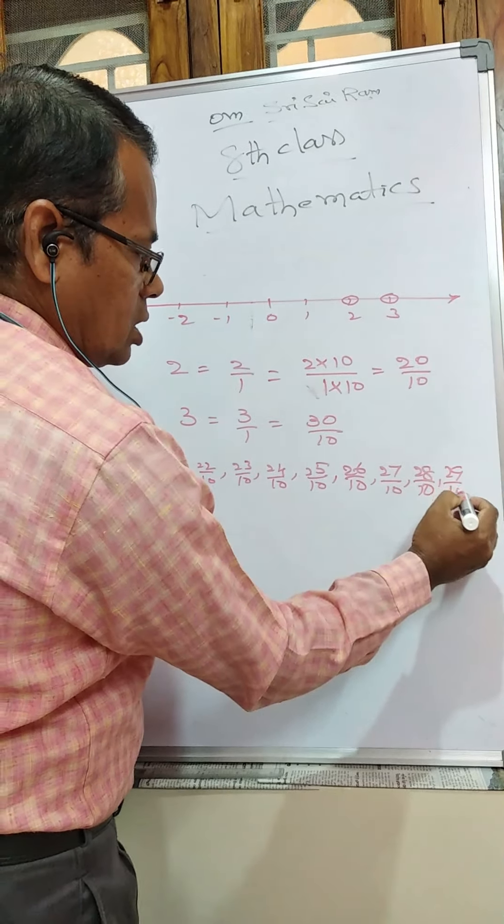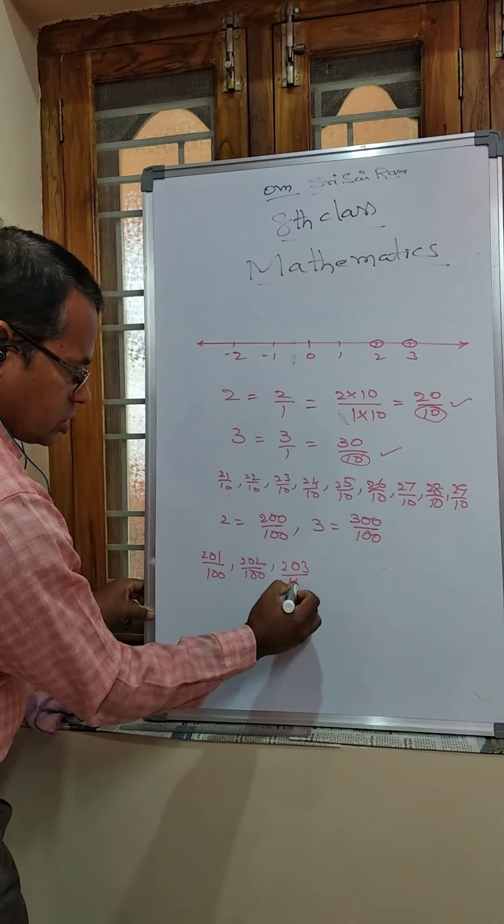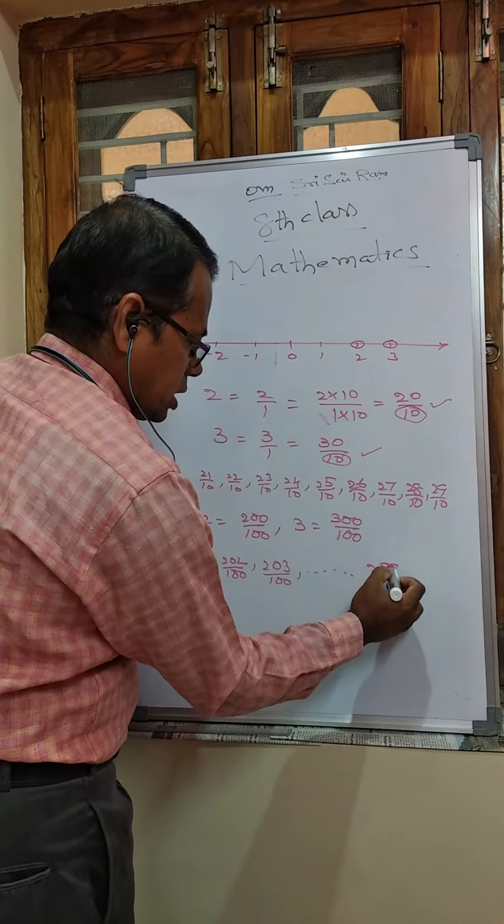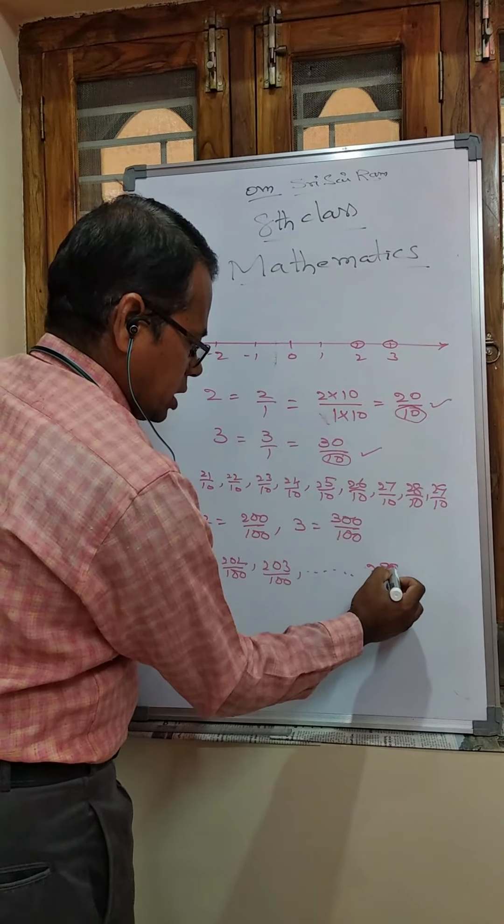If the denominator is 100, then 2 becomes 200/100 and 3 becomes 300/100. Between these, we have 201/100, 202/100, 203/100 and so on up to 299/100 — that is 99 rational numbers. As the denominator increases to 1000, the number of rational numbers also increases. So there are infinitely many rational numbers between 2 and 3.